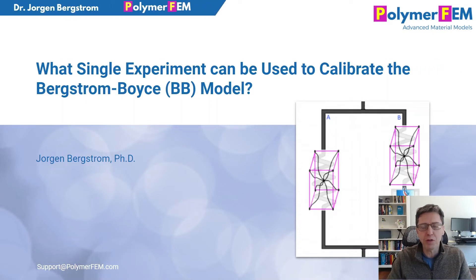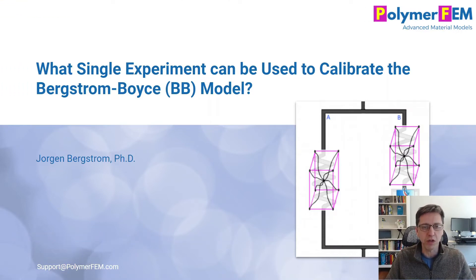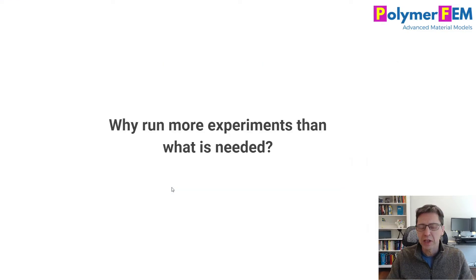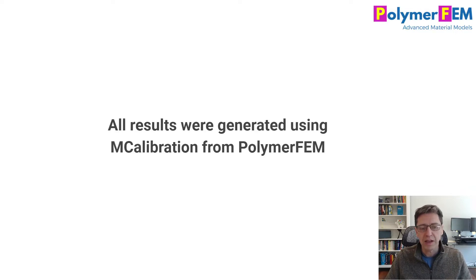Hi, in this video I'm going to show you what the minimum amount of experimental data is that's required to calibrate the Bergstrom-Boyce model, which is a viscoplastic material model specifically for elastomer-like materials. I will show that you can actually calibrate this material model using a single experiment if you think carefully about what that experiment is. Why run more experiments than is needed? Experiments cost time and money, so let's be smart about what experiments we'll run. What I'm talking about here is only for the Bergstrom-Boyce model, or similar two-network models of this viscoplastic nature. The results I'm using here will be generated using MCalibration from PolymerFEM.